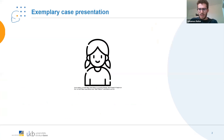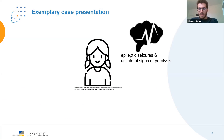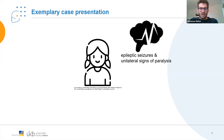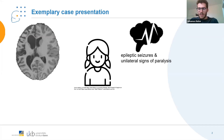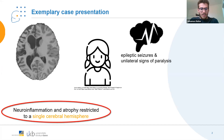Let me start with a brief case presentation of a six-year-old girl who was admitted to our hospital because of activation of epileptic seizures and the new onset of unilateral signs of paralysis. A clinical follow-up MRI was performed, and this MRI showed severe unilateral neural inflammation and atrophy restricted to one single hemisphere.